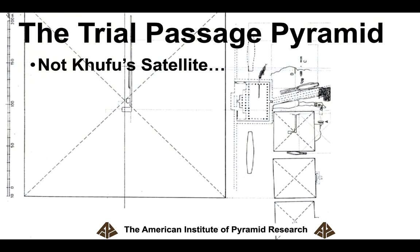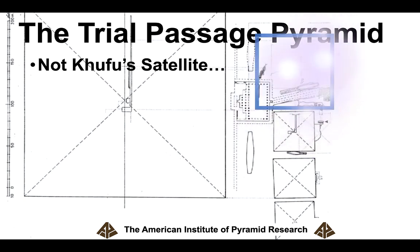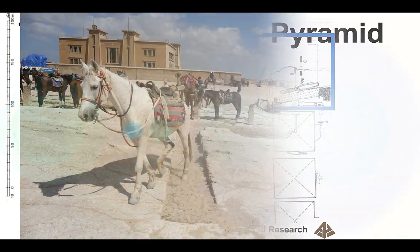Now, it's not Khufu's satellite pyramid. When Dr. Lehner wrote his paper where he talked about it, he called it a satellite, but then Zahi Hawass later found the actual satellite pyramid of Khufu down near the southeast corner. But this is still an incredible pyramid right there that would have been placed over the trial passages.